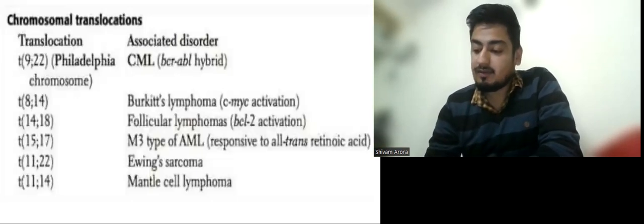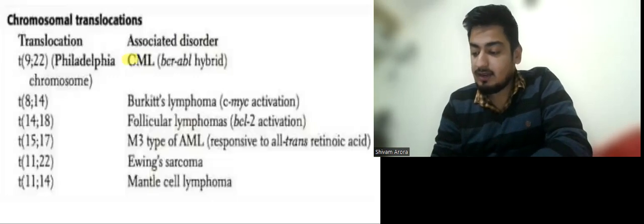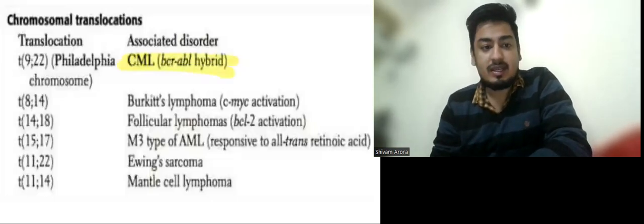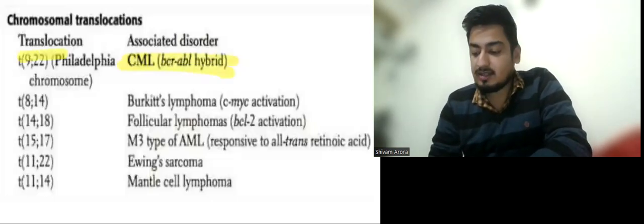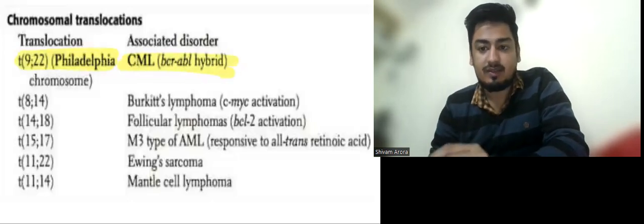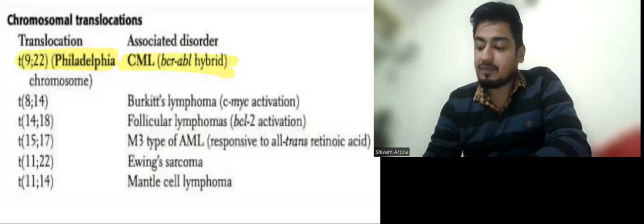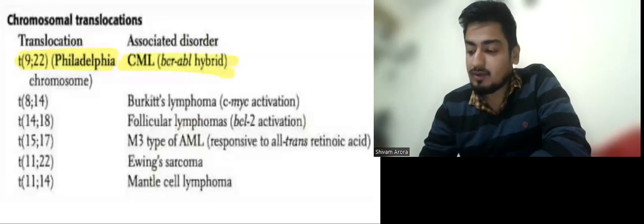First of all, we have the translocation in CML, that is translocation 9;22, which is also known as the Philadelphia chromosome. Let us discuss some things about CML.